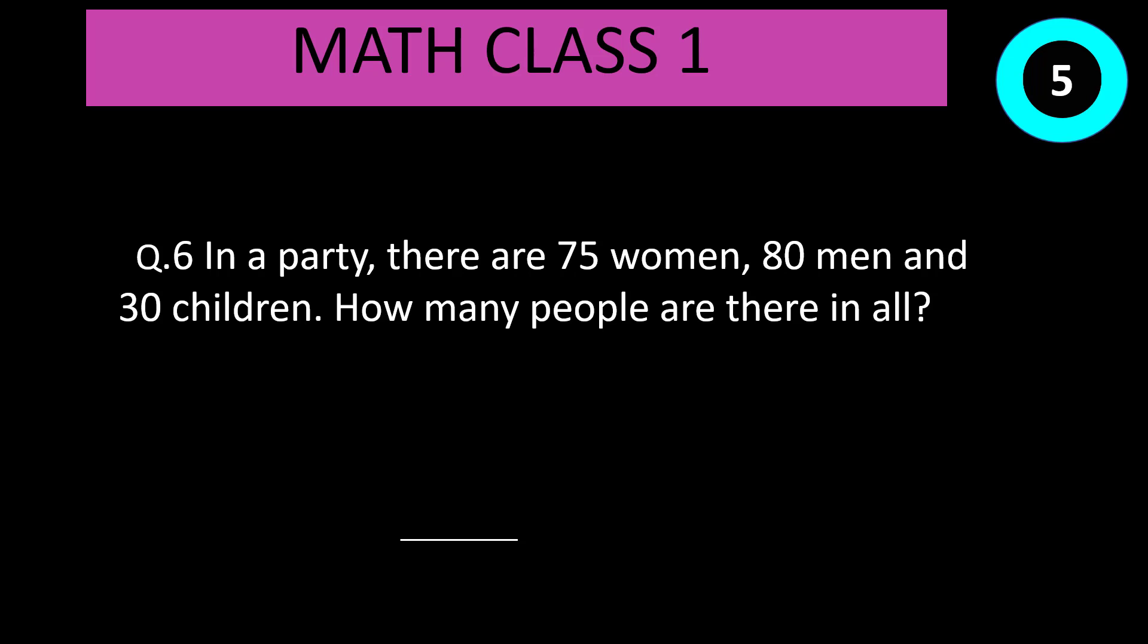Question number 6: How many people are there in all? Time start now. Correct answer is 75 plus 80 plus 30 equal to 185.